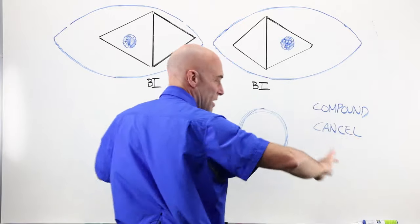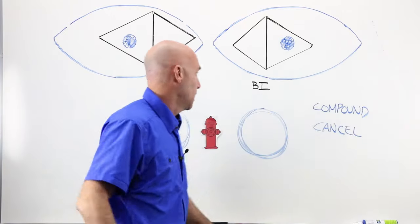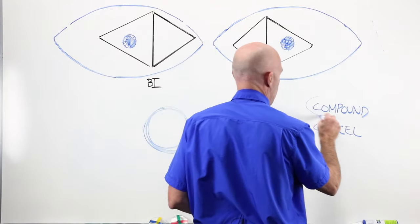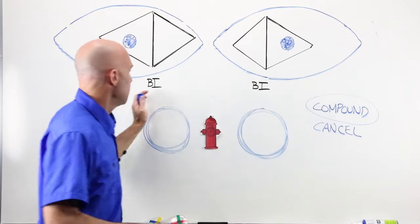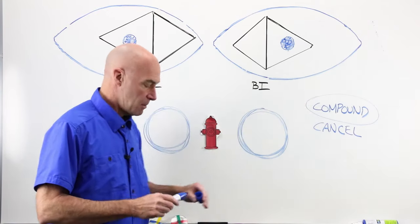This eye, because the base is in, apex is out here. My hydrant's going to appear over here. It's splitting. It's making things worse. One eye is pushing this way. One eye is pushing this way. Base in, base in prism compounds the problem. You add the amounts together. That's where that concept comes from.